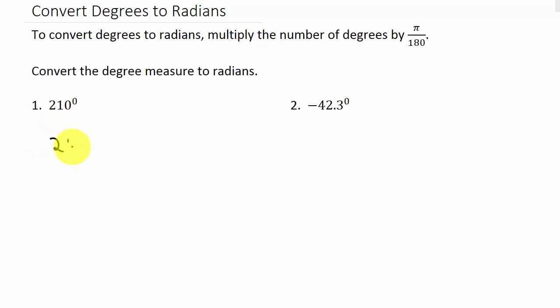We've got 210 times pi over 180, and that gives us 210 pi over 180. Then we want to reduce it, and so this reduces to 7 pi over 6.